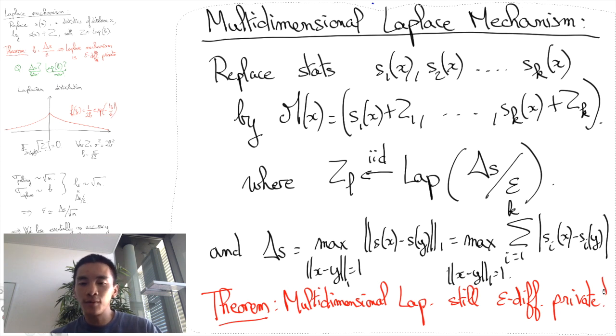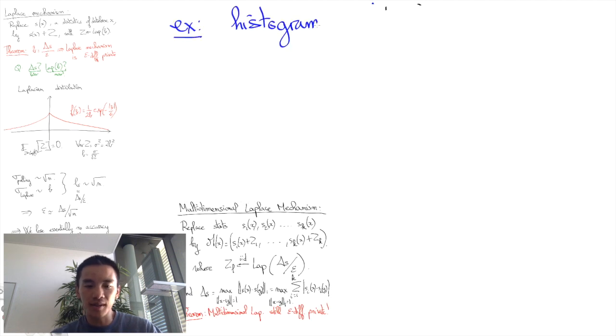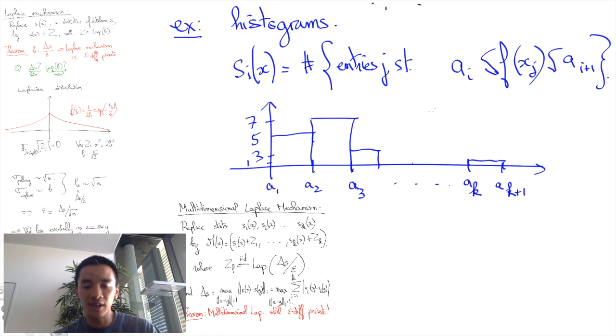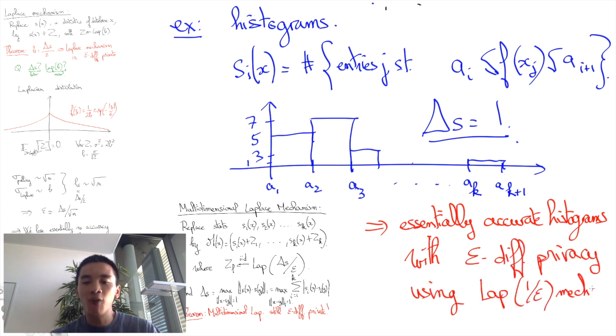In particular, an important special case of the multidimensional Laplace mechanism is histogram queries. Importantly, the addition or the removal of one entry only adds or removes one to only one column of the histogram. As a result, we still have delta S equals to 1 even though S is multidimensional. Thus, histogram queries can be made epsilon-differentially private by adding Laplace noises to each column of parameters 1 over epsilon. And we shall prove the differential privacy of Laplace mechanisms in a future video.